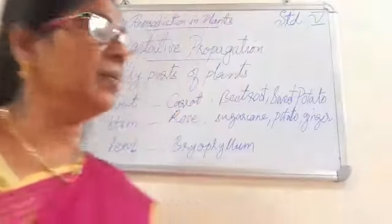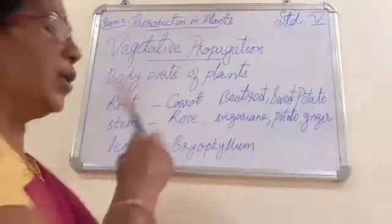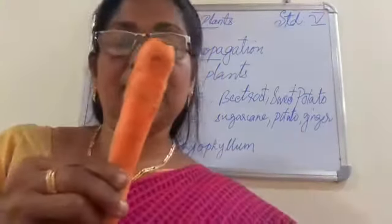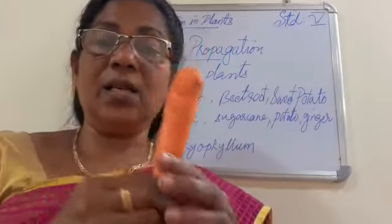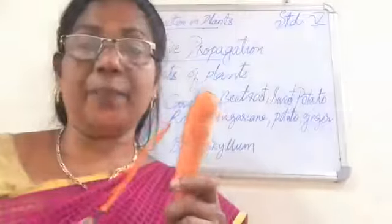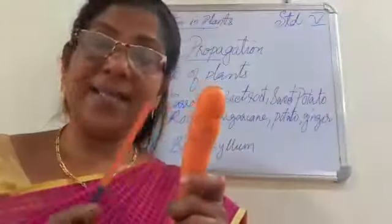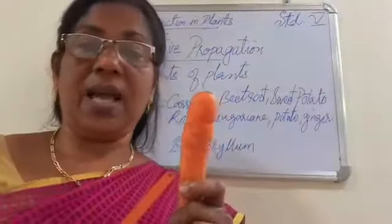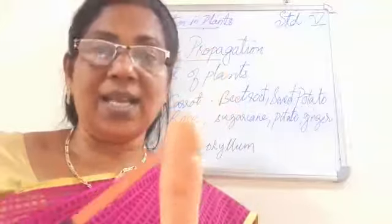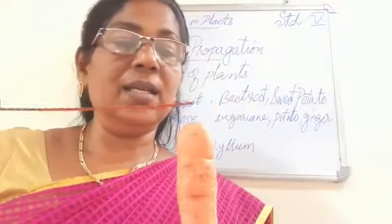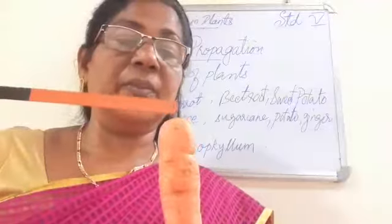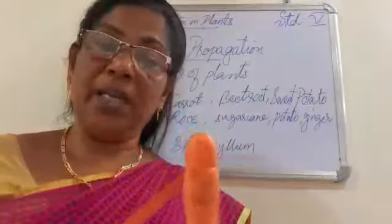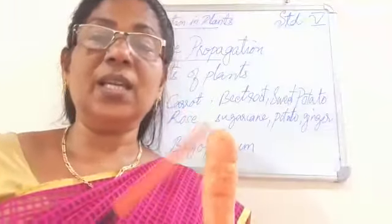Now let's see how some roots of the plant grow into new plants. This is a carrot, and this carrot grows into a new plant from itself. Carrot is the root of the carrot plant. When we bury this carrot in the soil, a stem will grow from the topmost part of this carrot. So carrot is a vegetative part of the plant — specifically the root.